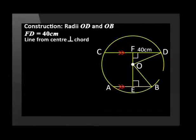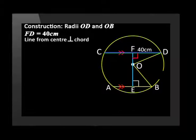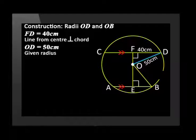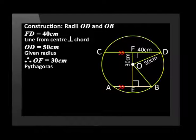We start our working by using the theorem that John has just proved. It states: the line from the center of a circle perpendicular to the chord bisects the chord. We were given that CD is 80 cm, so we can say that FD equals 40 cm, because of the line from the center perpendicular to the chord. The radius is 50 cm as given. In this triangle, the hypotenuse is 50 cm and one side is 40 cm. We know that one of the primary Pythagorean triples is 3-4-5, so the third side must be 30 cm. Therefore OF is 30 cm, by Pythagoras.